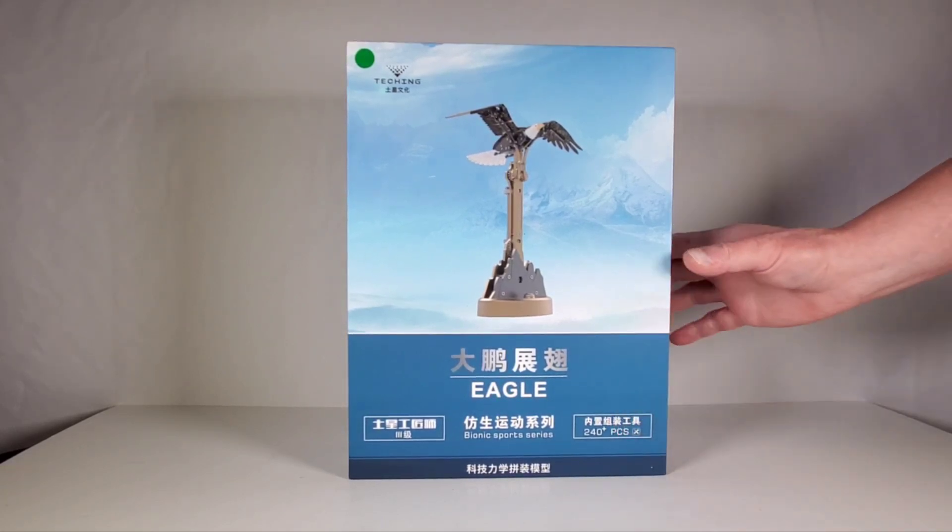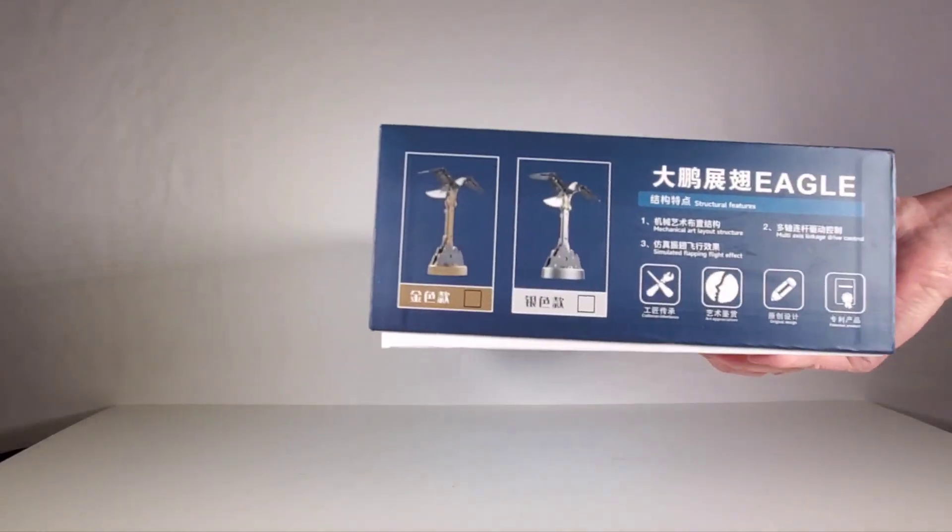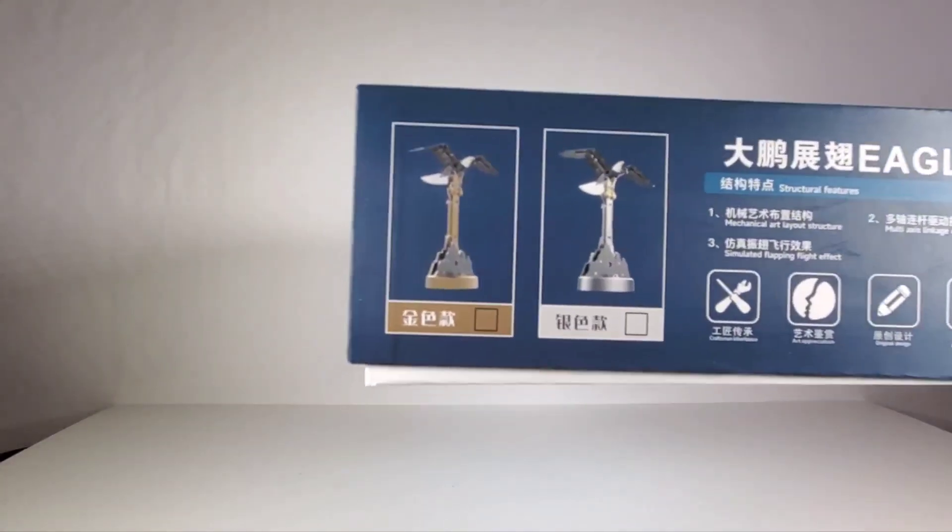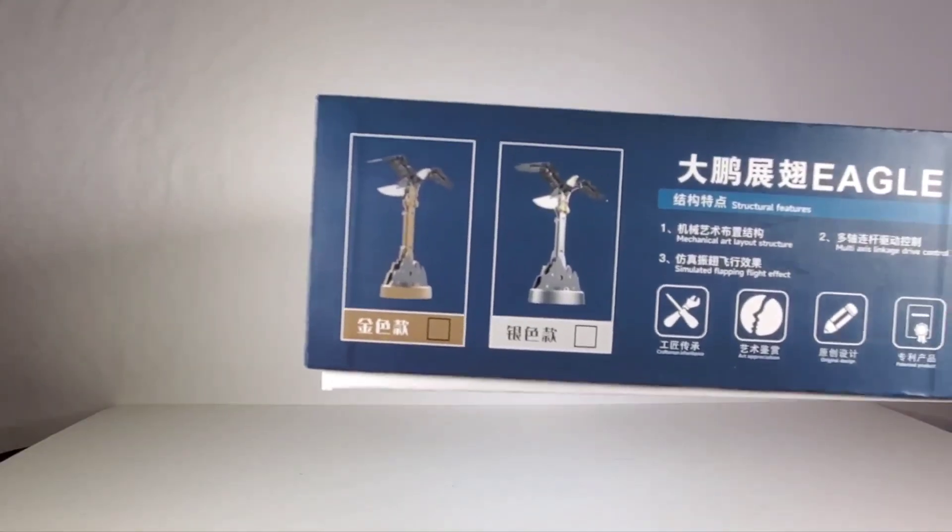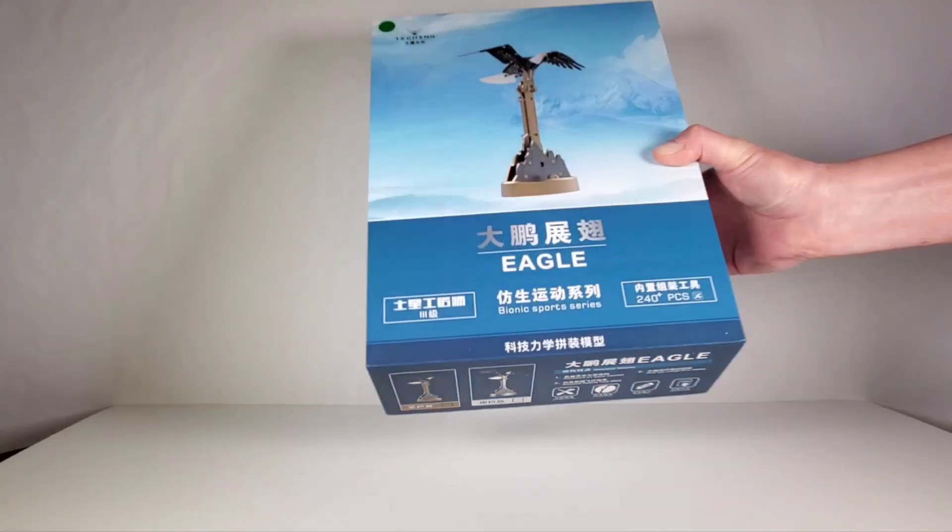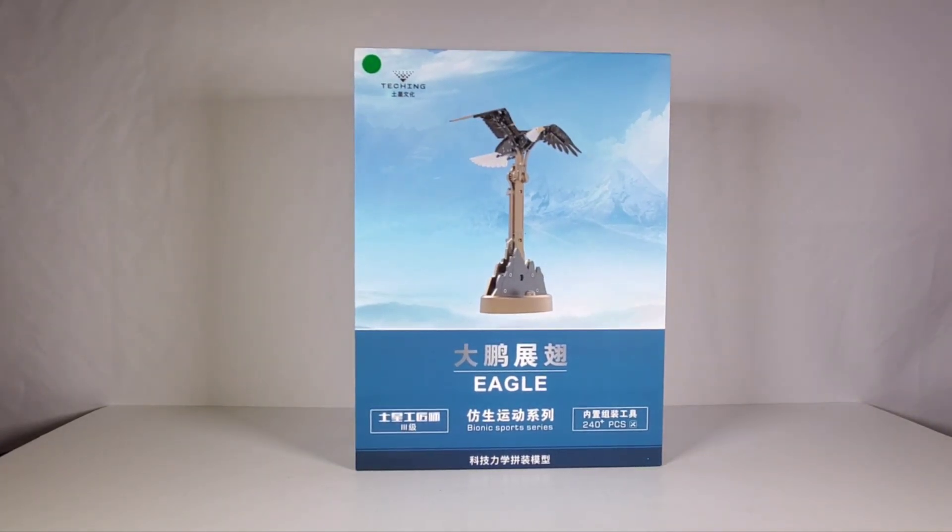It has 240 pieces. There's two different versions of this kit you can buy. You can get the silver and gold version right here, or you can get the all silver version. So I got the gold and silver version. Let's take a look at the parts.